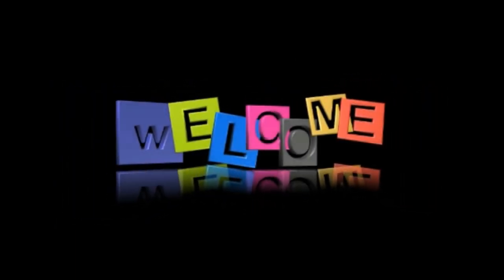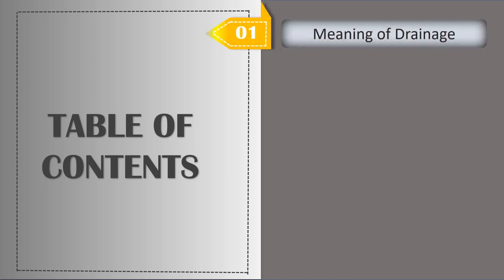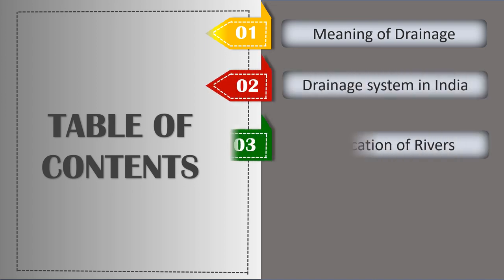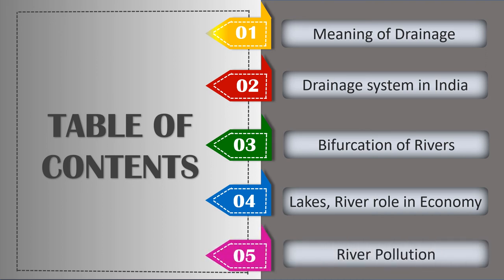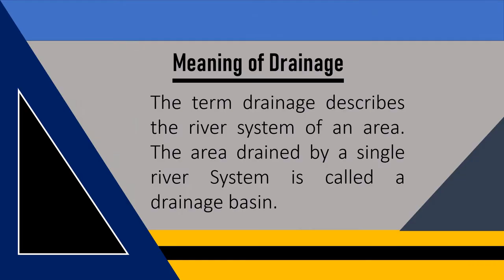Welcome back to another video of Online Class with another interesting topic. Today we would be coming across a number of topics. Let's have a look at the table of contents: first we will be discussing about the meaning of drainage, followed by drainage system in India, bifurcation of rivers, lakes, river role and economy, and river pollution.